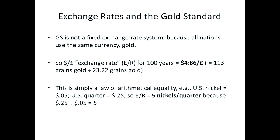Exchange rates and the gold standard: the gold standard is not a fixed exchange rate system. The only reason why $4.86 (plus or minus one percent) exchanged for one British pound was because of the arithmetic relationship between 113 grains of gold and 23.22 grains of gold. The British pound contained about five times the amount of gold as a gold dollar. Therefore it took approximately five dollars to purchase an ounce of gold. That's just a law of arithmetic. Today a U.S. nickel is one-twentieth of a dollar and a quarter is one-fourth — it takes five nickels to get one quarter because of arithmetic. They represent different denominations of the same monetary unit.